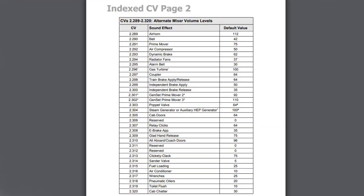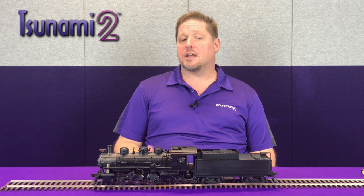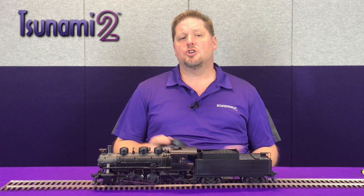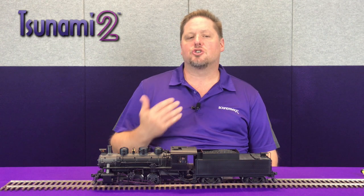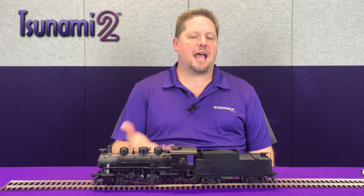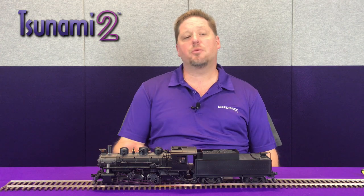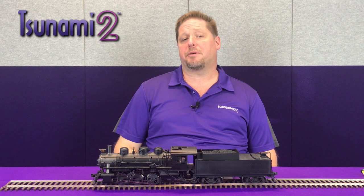One other feature built into the decoder is an alternate volume mixer, set in CVs 2.289 through 2.320. This is basically a second set of volumes you can adjust and fine-tune. You can enable this alternate volume mixer by setting a function button — usually an unused button like function 28 — so that at home you can have a lower set of volumes for a small layout, and then when you get to a club or public display, you can leave the volumes up at full blast.